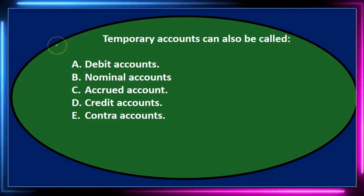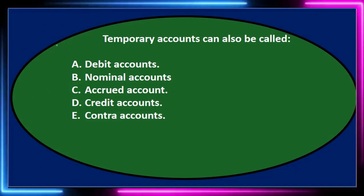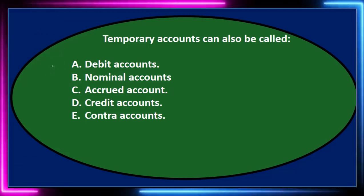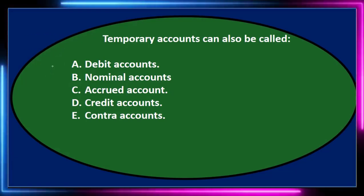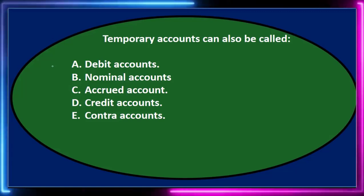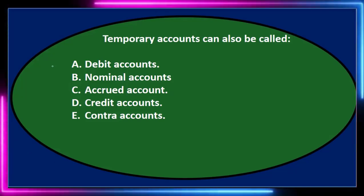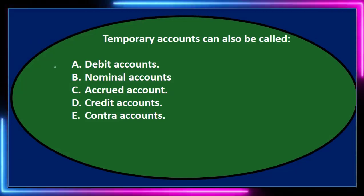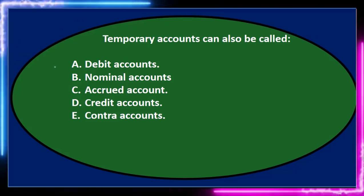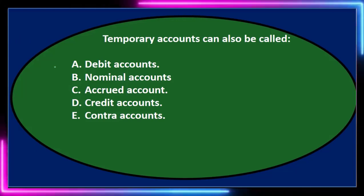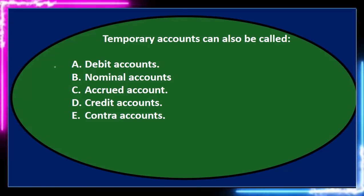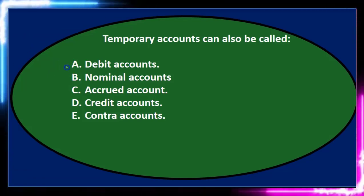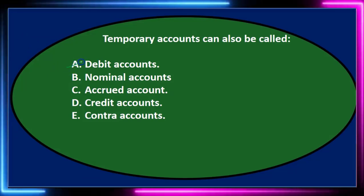The stem is: temporary accounts can also be called. Let's go through these and cross them out as we go. Debit accounts — every account has a debit and credit balance. Debits apply to account types: assets have debit balances, liabilities and capital have credit balances, revenue credit and expenses debit — but that doesn't apply to whether they're temporary or not. So I'm going to cross that one out.